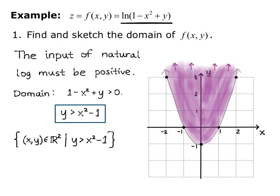I'll add some arrows to indicate that the region goes up infinitely. And there's our domain, all xy ordered pairs that satisfy y is greater than x squared minus 1.